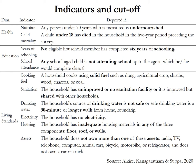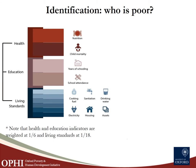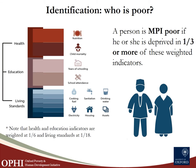Once we have established these cutoffs and identified who is deprived, we compute the deprivation score. Then we ask: who is poor? We sum up the deprivation scores across the 10 indicators. Within the Global MPI, a person is MPI poor if their deprivation score is equal to 33.3% or higher — in other words, if they are deprived in one third or more of these 10 weighted indicators.